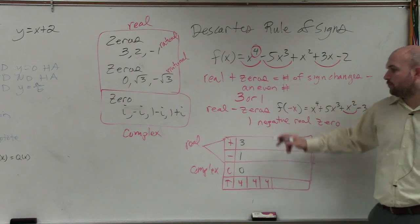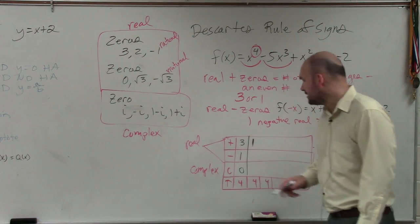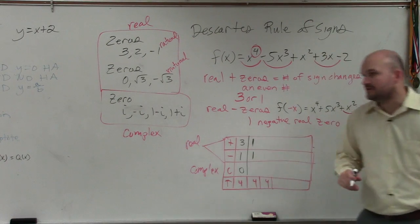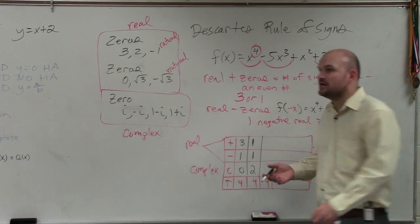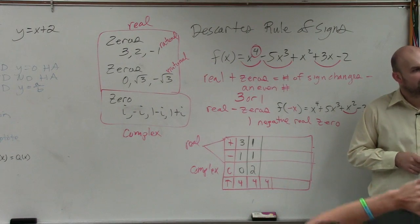What about if I had one real? If I had one real, how many negatives do I have to have? Still 1. So then how many complex do I have to have? 2. 2. And guess what? That's all the options I have. That's it.